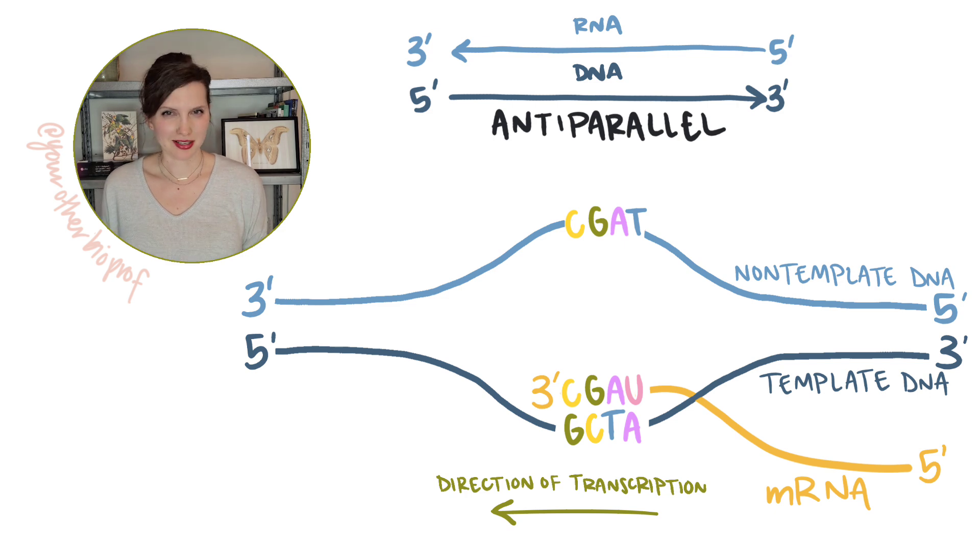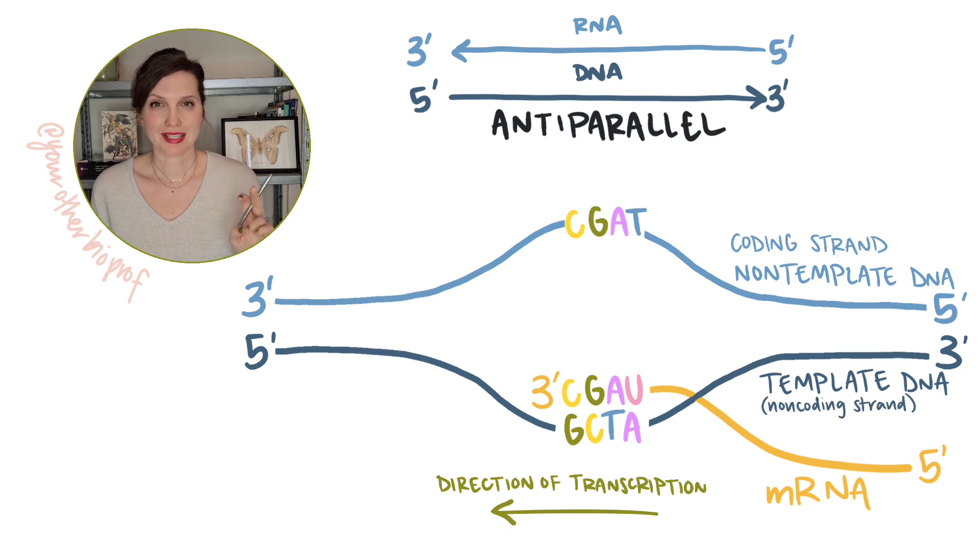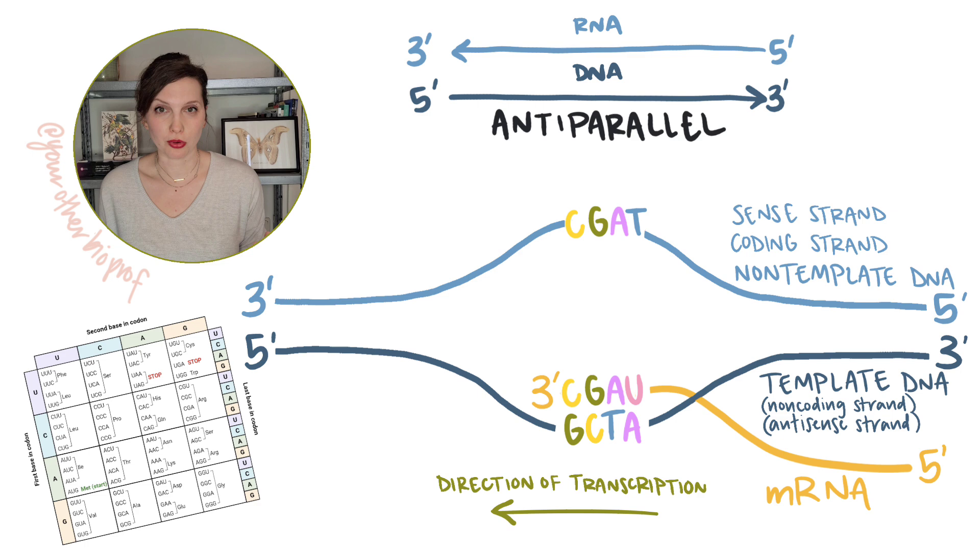So does that mean that the non-template strand and the RNA have the same sequence and directionality? Yeah, except for the T's and U's. And that's why you may often see the non-template strand of DNA called the coding strand, because it has the same sequence as the RNA that's being produced. Similarly, and annoyingly, you may also see this strand referred to as the sense strand, because if you read it in the right direction that makes sense, you can see the codons, the code for making a protein.